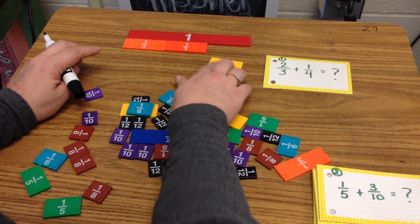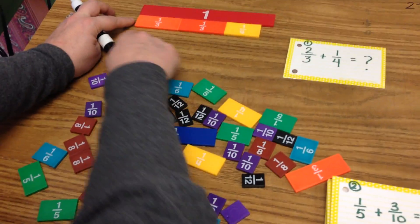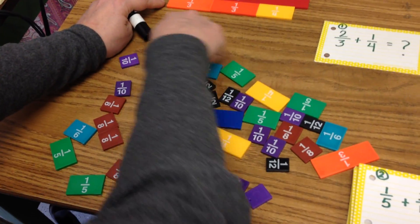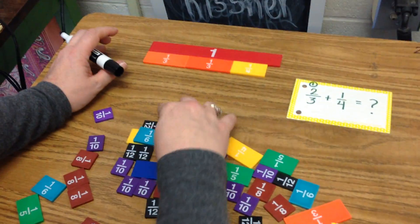Because we're adding, we're going to put the one-fourth on the same row. Now what I want to do is create another row of tiles all using the same denominator, which means the same number, same color.